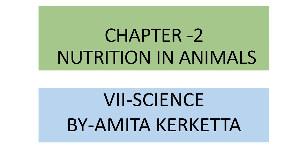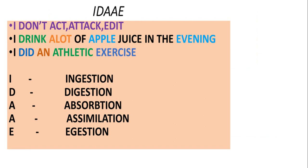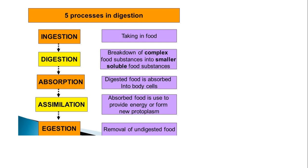Hello students, we are going to continue Chapter 2: Nutrition in Animals, 7th class. I'm Amita. In the previous video we were talking about the process of digestion. I have told you about the steps using the mnemonic IDAAE: I for ingestion, D for digestion, A for absorption - note the spelling of absorption - A for assimilation, and E for egestion. You can practice and learn these steps.